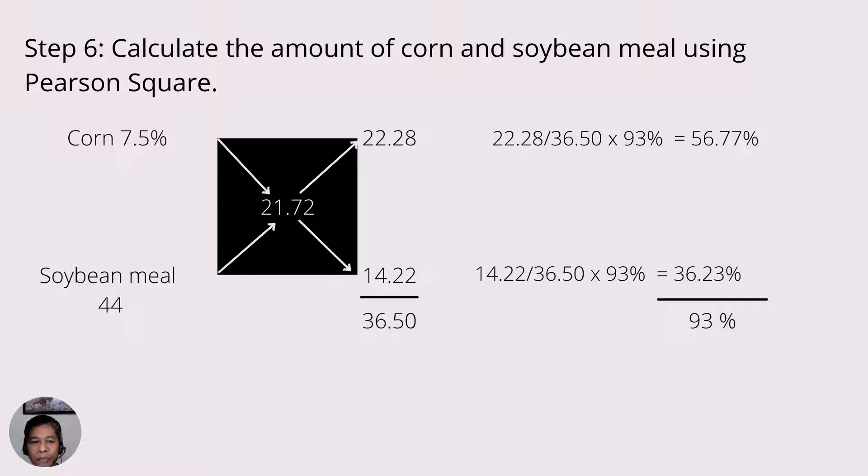So the only difference that you can see here from the ones I've shown you in my first 2 episodes is that we multiplied the quotient between the parts of corn and the total amount or the total parts by 93% instead of 100. Why is it so?